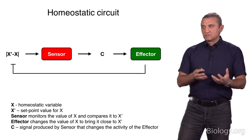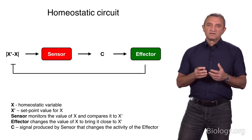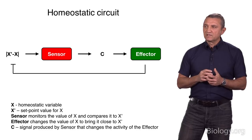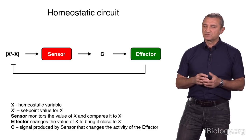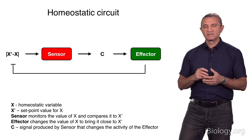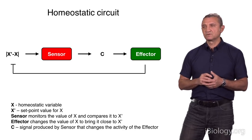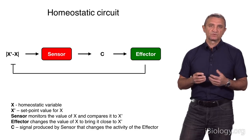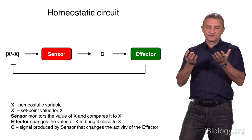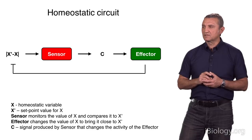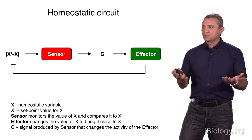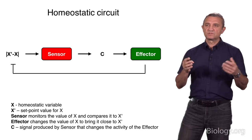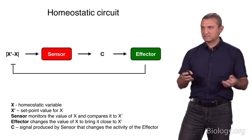If glucose level is lower than the set point value, then alpha cells of the pancreas will detect that low level and start producing a different hormone, glucagon, which acts on effector tissues — for example, liver — and causes them to start producing glucose to raise the level to the desired value. That's how the homeostatic circuit works at organismal, tissue, and cellular levels.